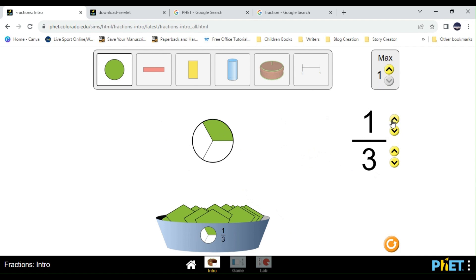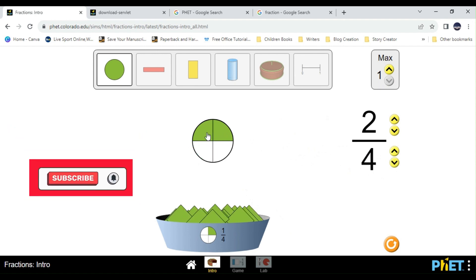Let's increase to two. You see that? We have one, two. Let's increase the denominator to four. So you see that? We have one, two, three, four. So this is two over four.